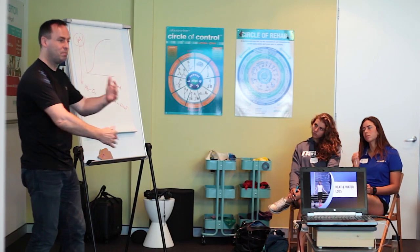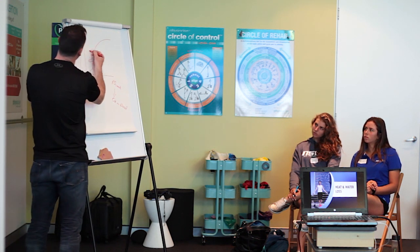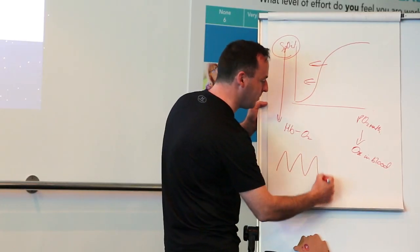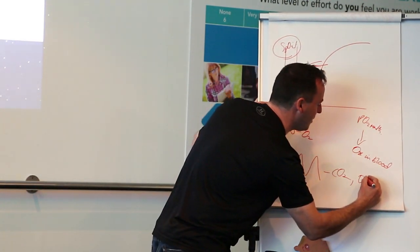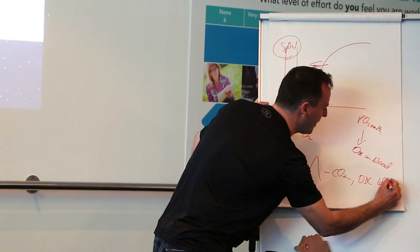If you breathe hard, the curve shifts to the left, so hard breathing. You lose CO2. The curve shifts to the left, so the oxygen dissociation curve shifts to the left.